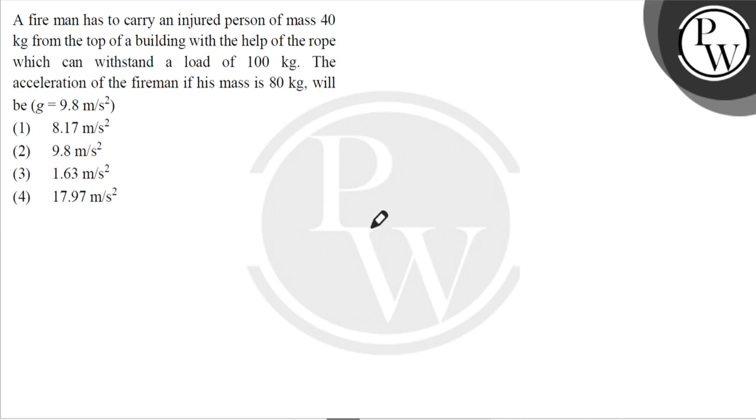So suppose this is the rope and this is our fireman. The fireman accelerates downward while holding another person. This is another person. The total mass is 120 kg.